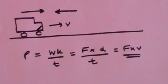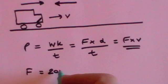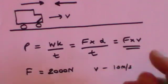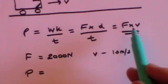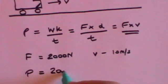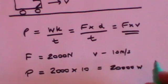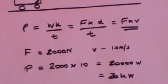Let's say that the force of the engine is 2,000 newtons, and the velocity is 10 metres per second. What then would be the power of the engine? Well, that would simply be force times velocity, which is 2,000 times 10, which is 20,000 watts, or if you like, 20 kilowatts.